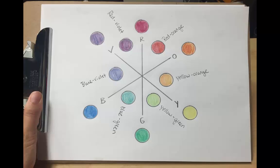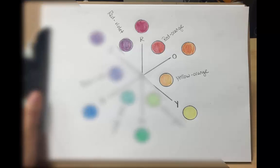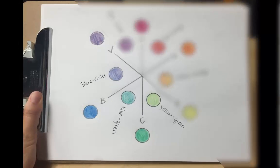Color temperature can be identified as well. Warm colors are on the half of the color wheel that spans from yellow to red-violet. Cool colors are on the half of the color wheel that spans from yellow-green to violet.